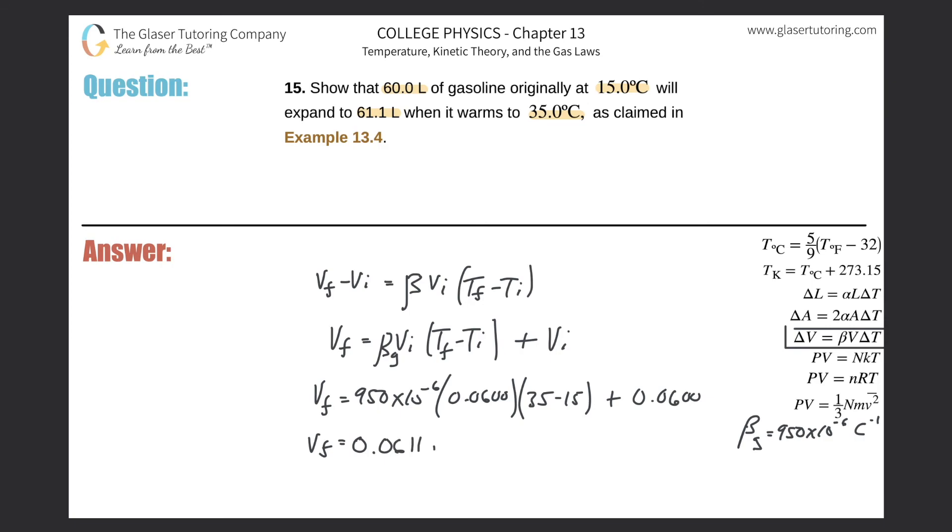Converting this from cubic meters to liters, just multiply by 1000. We get our answer of 61.1 liters. There you go.